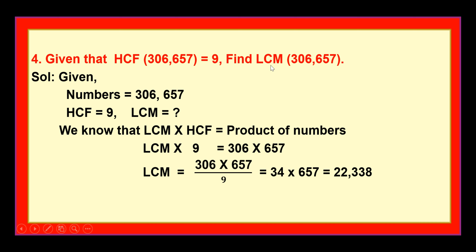Therefore, LCM of 306 and 657 is 22,338. Even if HCF were not given, since we know both numbers we could find LCM directly. Anyhow, the LCM of the given numbers is 22,338. Is it clear, dear students? Very good. Thank you, one and all.